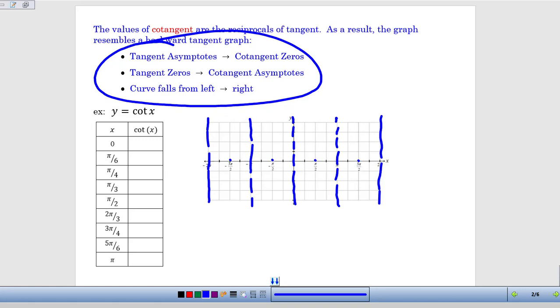At all the 45s, at all the over fours, at those locations, we're always at one or negative one on our original tangent graph. The reciprocal of one is one. The reciprocal of negative one is negative one. So those points are going to be unchanged. When we're here at π/4, our graph for cotangent is going to be at the same place as it was for tangent. It's going to be at one. And likewise, at 3π/4, it's going to be at negative one.